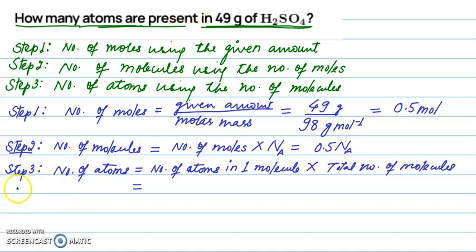If we see H2SO4, for one molecule of H2SO4, we have two atoms of H, one atom of S, and four atoms of oxygen. So it's 2 plus 1 plus 4, which equals 7. There are seven atoms in one molecule of H2SO4. So we'll write 7 times the total number of molecules we calculated, which is 0.5 Na, and it comes out to be 3.5 Na.